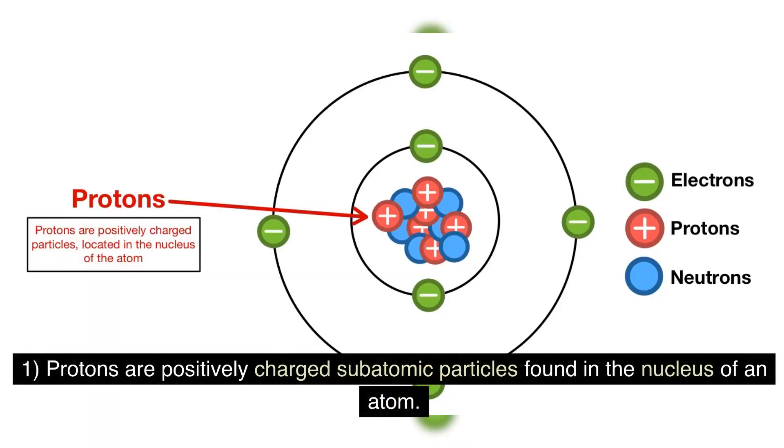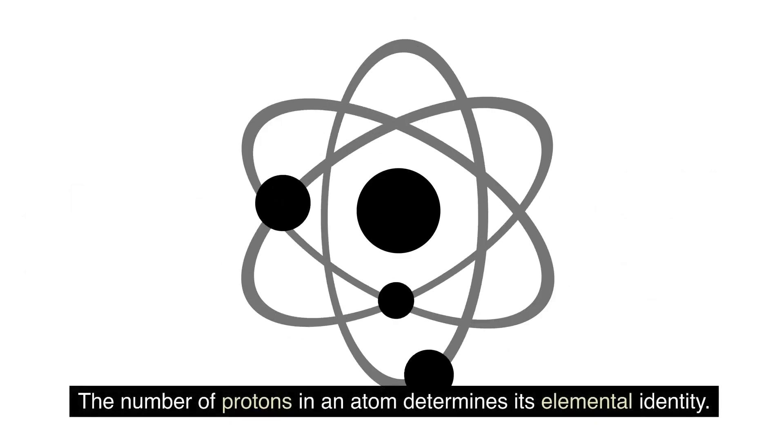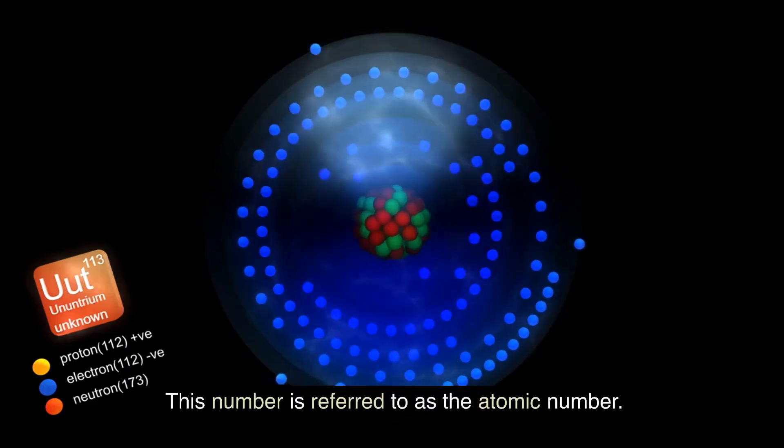Protons are positively charged subatomic particles found in the nucleus of an atom. The number of protons in an atom determines its elemental identity. This number is referred to as the atomic number.